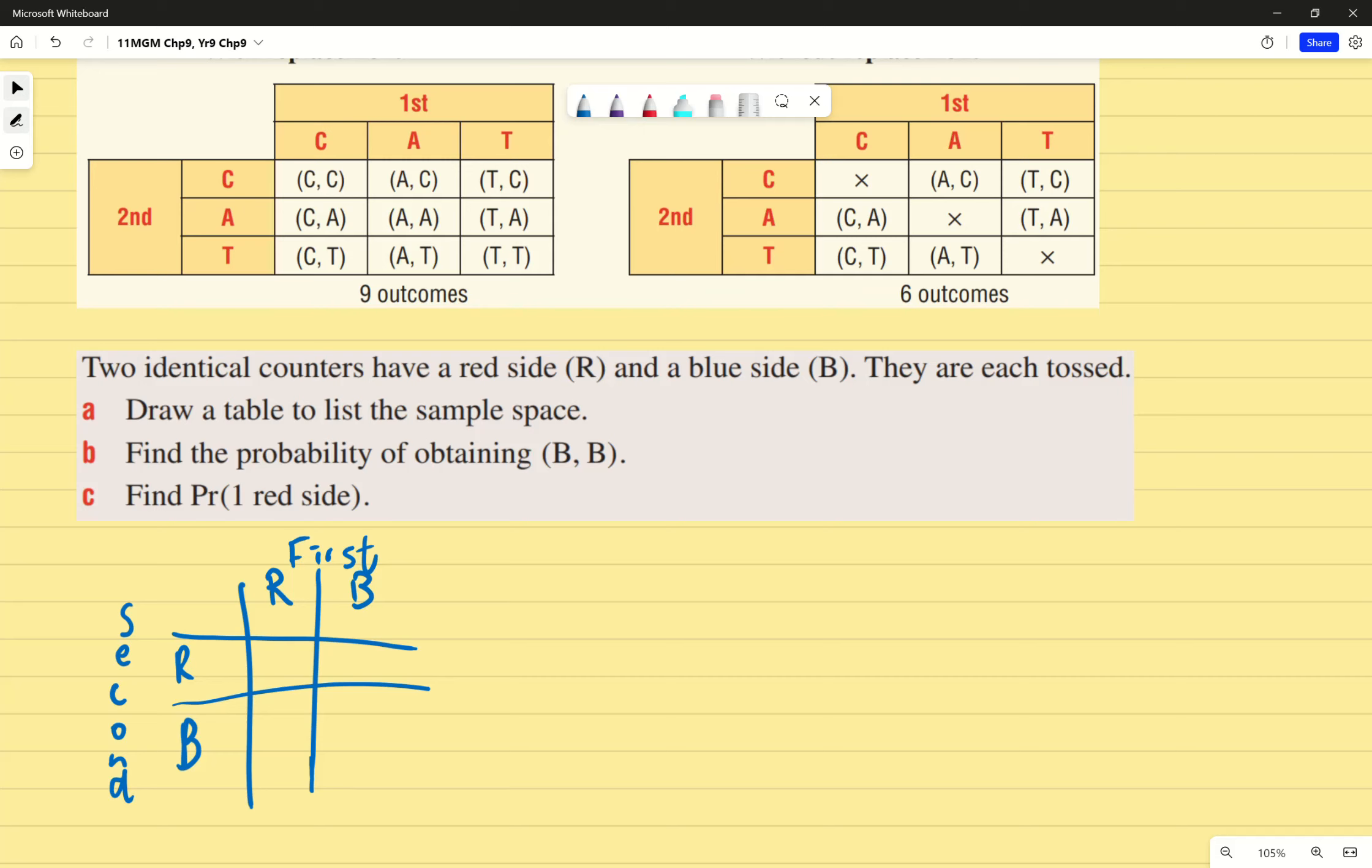It's only a two by two grid, which means there's only four outcomes. And I know that because it's red and blue. So this one here, I'm going to write as red, red, just using brackets to show it's red and then a red. This one would be blue and red, red and blue, and blue and blue.